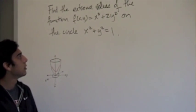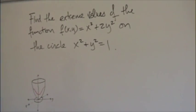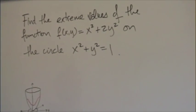Find the extreme values of the function f(x,y) = x² + 2y² on the circle x² + y² = 1.